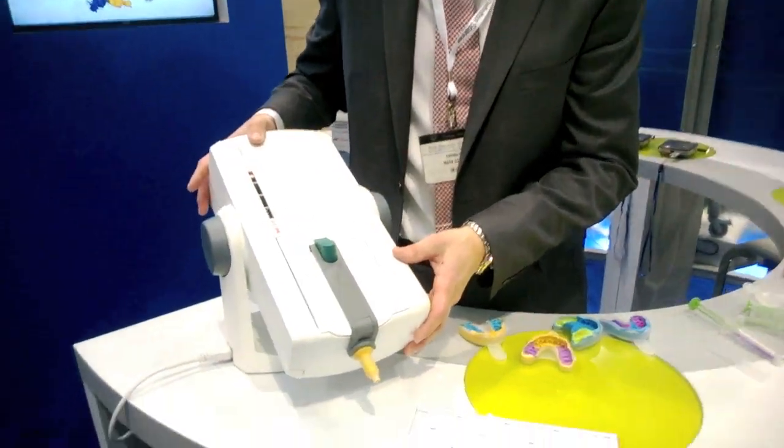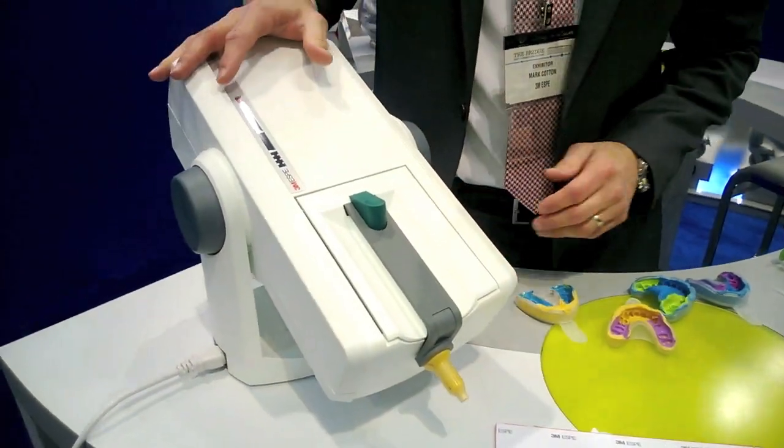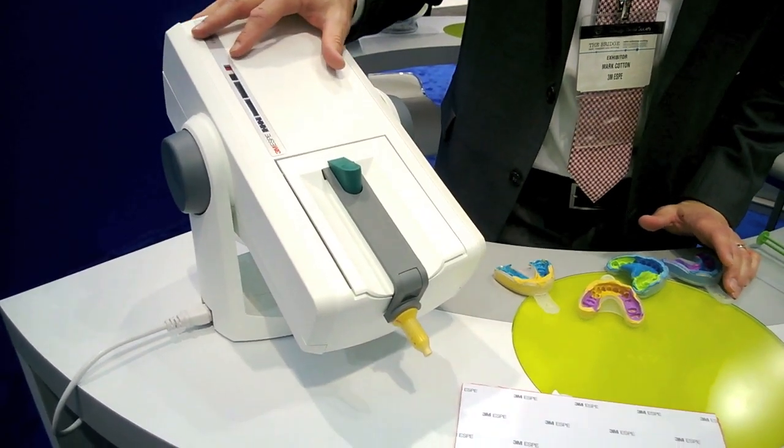This is the newest automatic mixing machine from 3M ESPE. It's a complement to the Pentamix 3. This one is called the Pentamix Lite.